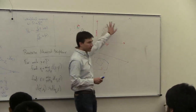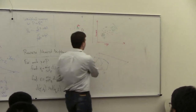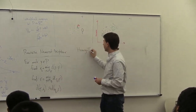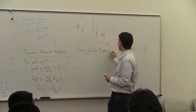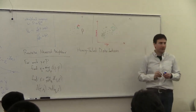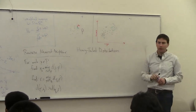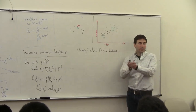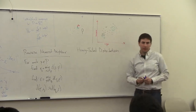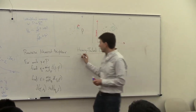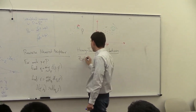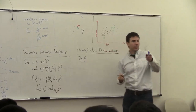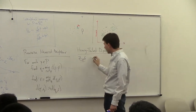Let me talk a bit more about skewed distributions. Who's heard of a heavy-tailed distribution? This is a distribution that is decaying in a way that's not exponentially decaying like a Gaussian, but instead decaying polynomially. A classic formal example of this is called the Zipf distribution.